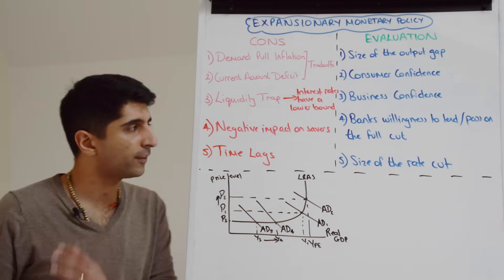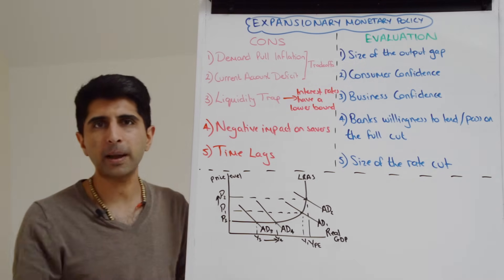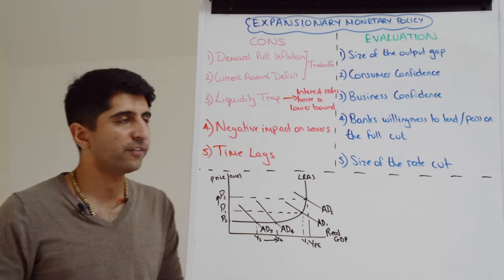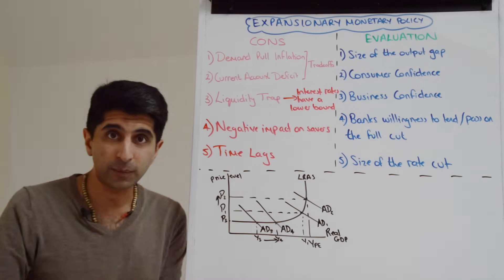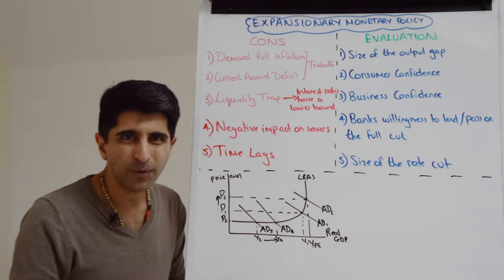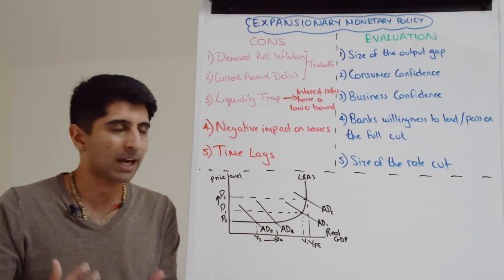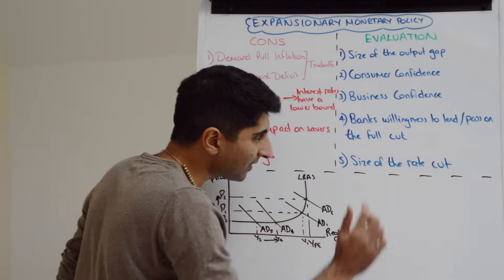But also we could say, look, even if they're willing to lend, are they going to be passing on the full cut? Because if central banks cut their interest rate by 0.5%, let's say, will banks follow with the same level of the cut? If they don't, then we might not see the boost in AD that we would like to see.